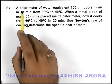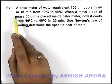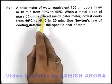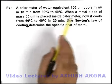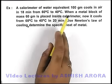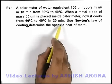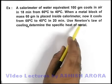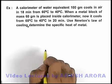In this example we are given that a calorimeter of water equivalent 100 grams cools in air in 18 minutes from 60 degrees Celsius to 40 degrees Celsius. When a metal block of mass 60 grams is placed inside the calorimeter, now it cools from 60 to 40 degrees in 20 minutes.